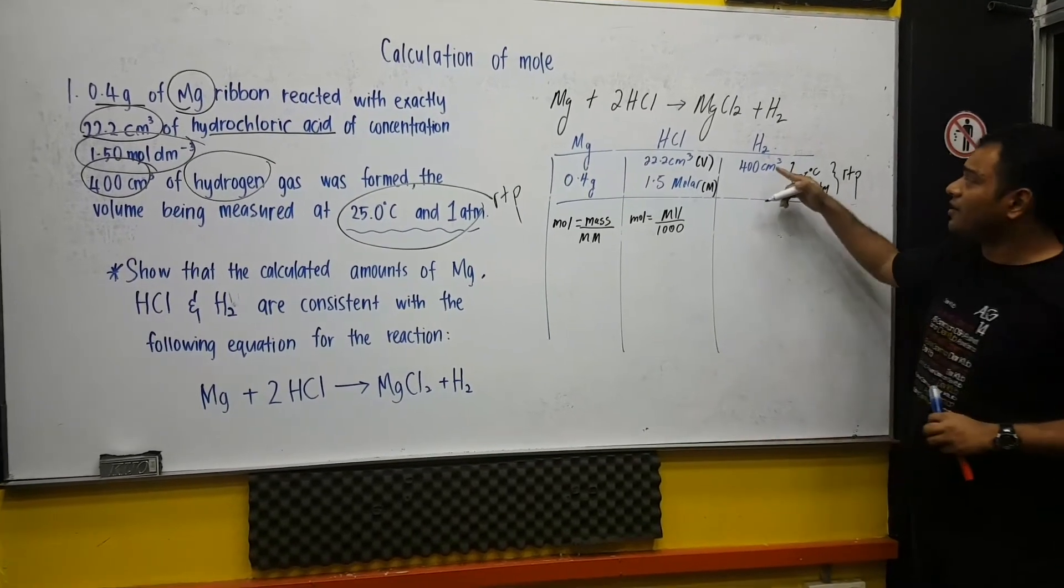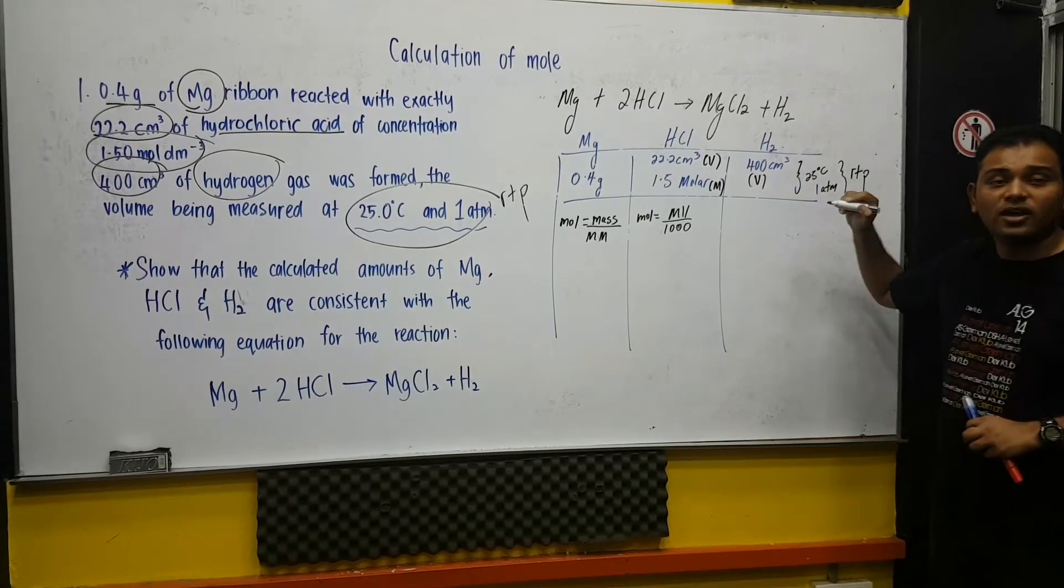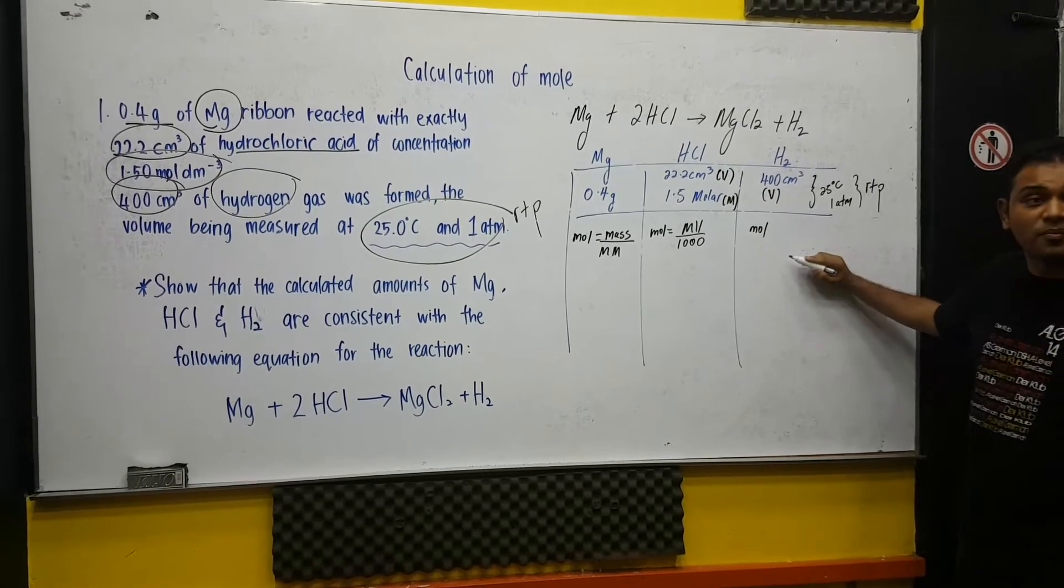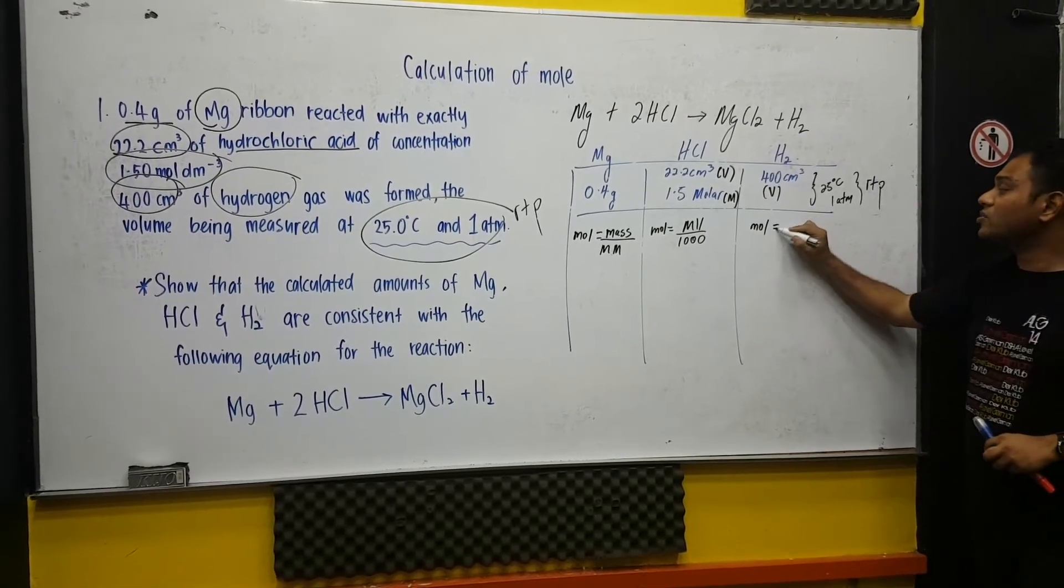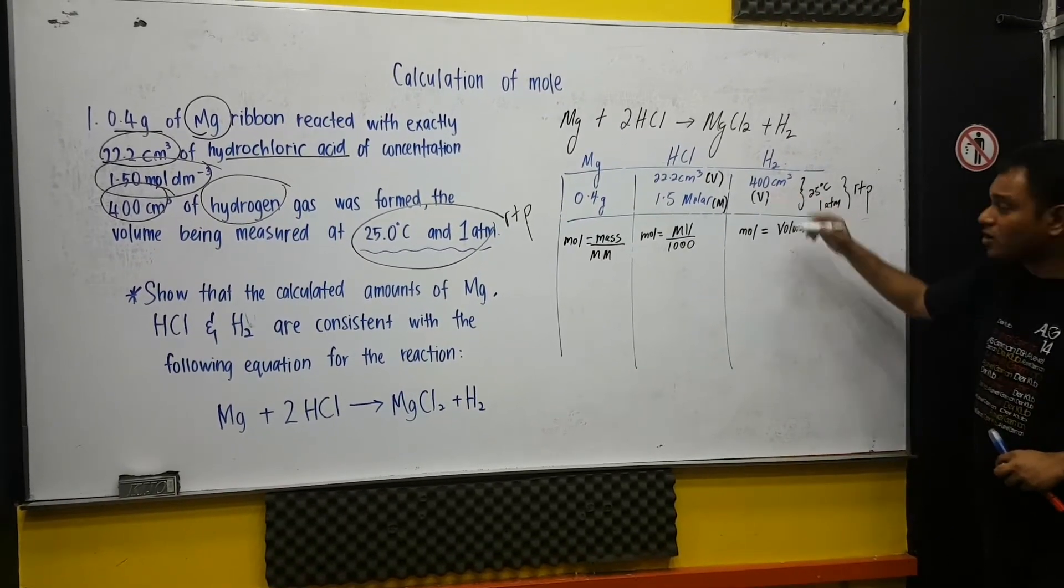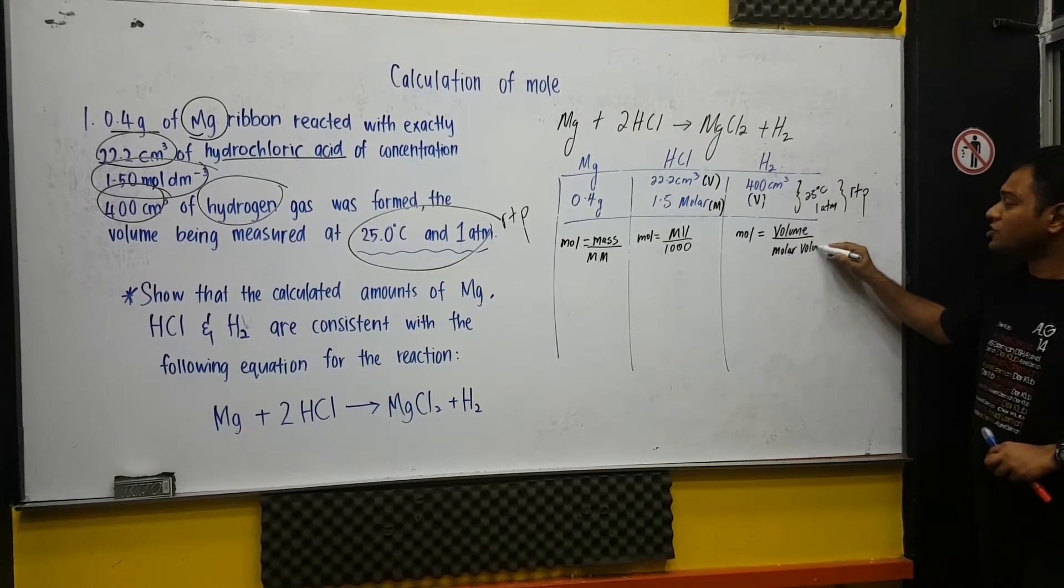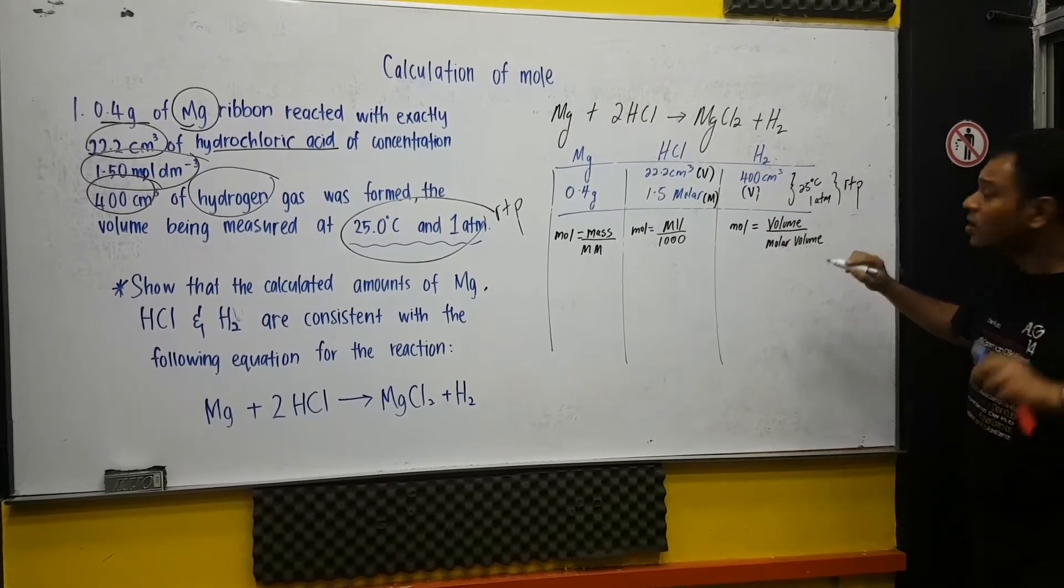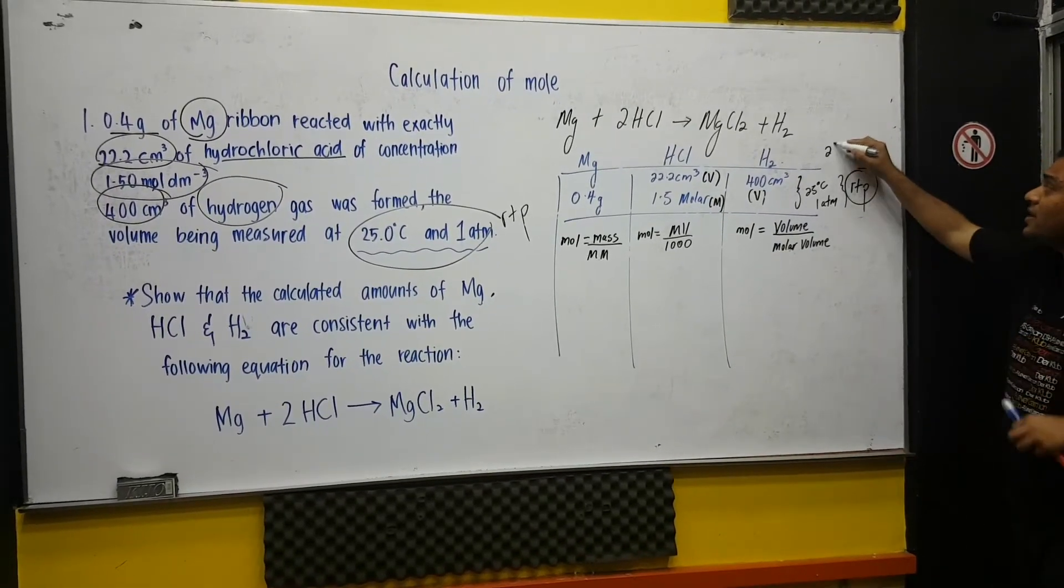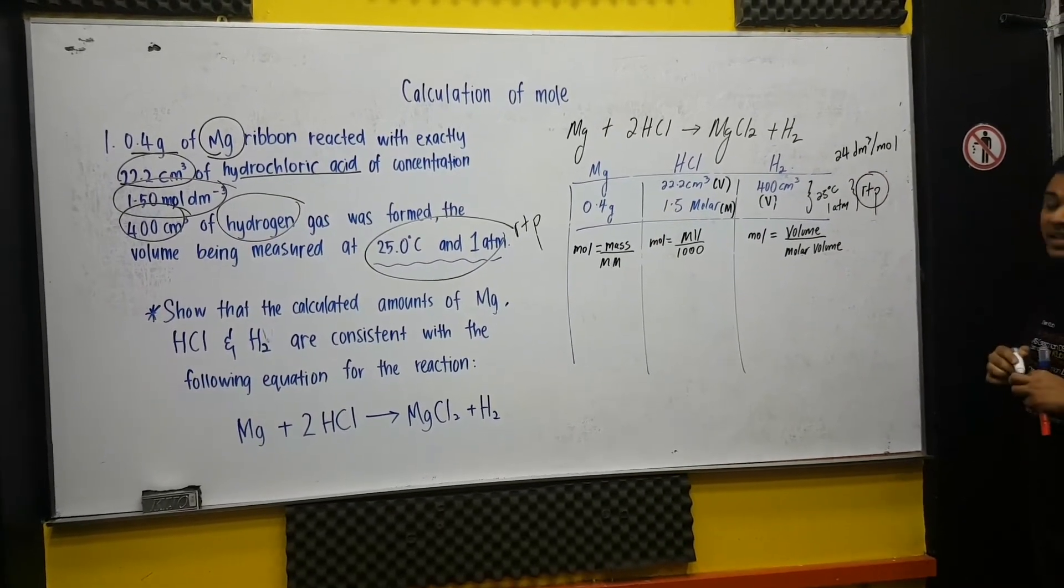And on the other hand, we have this. It is something related to volume. This is volume, am I right? As you can see, the information or the calculation of mole will be mole equivalent to volume. Volume is this volume, of course. And subdivide with molar volume. For your information, molar volume for RTP, RTP is standardized. It is 24 dm³ per mole.